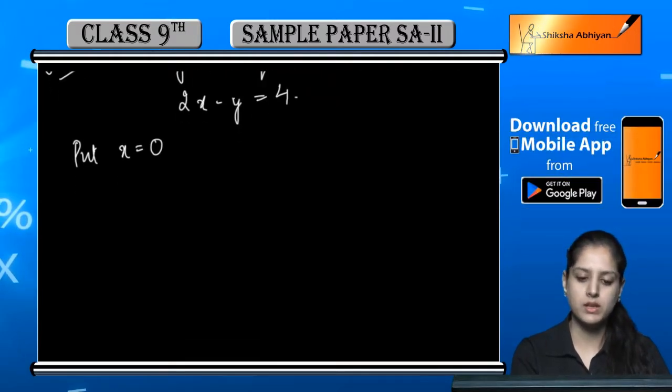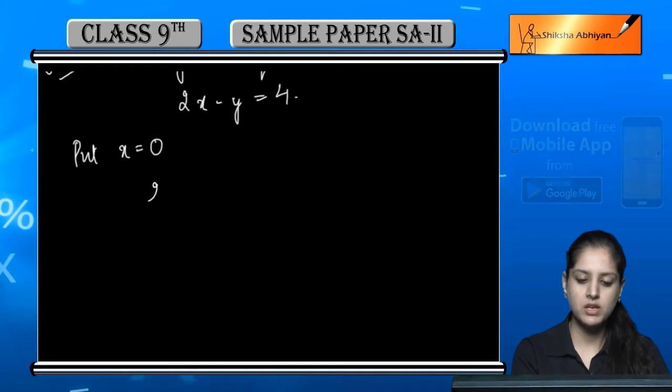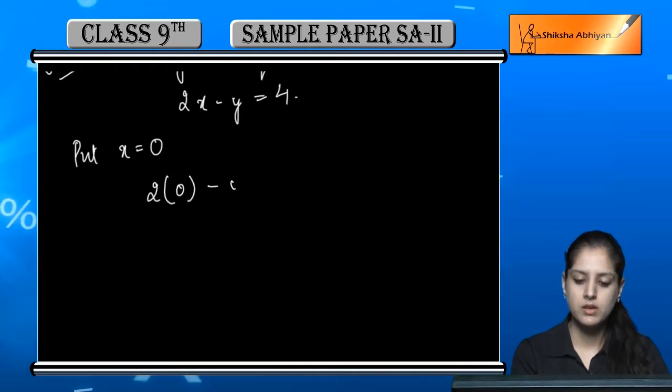Is equation me jo x hume given hai usko zero put karke hume y ki value nikalenge. So equation kya ban jayegi? 2 into x, x ki jaga hume zero put kiya, minus y is equal to 4. So 2 into 0 is 0 minus y is equal to 4.